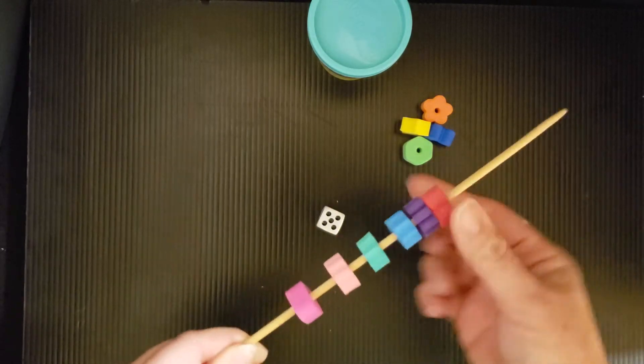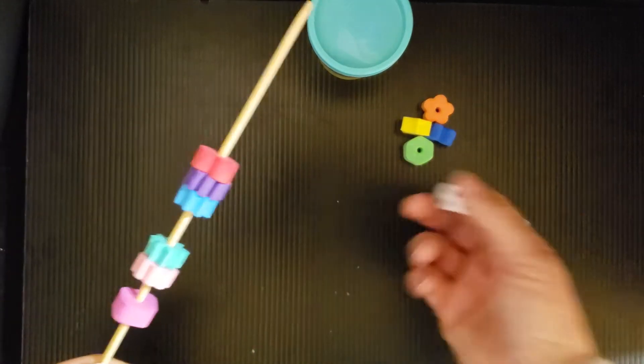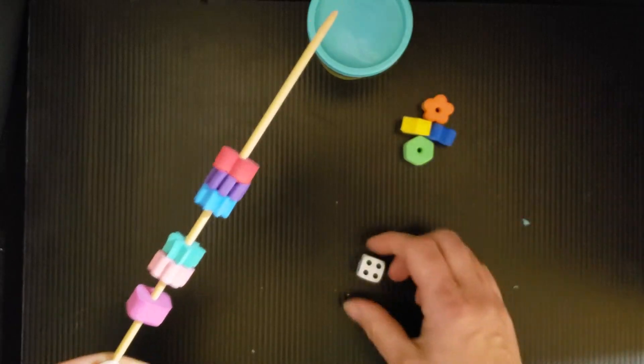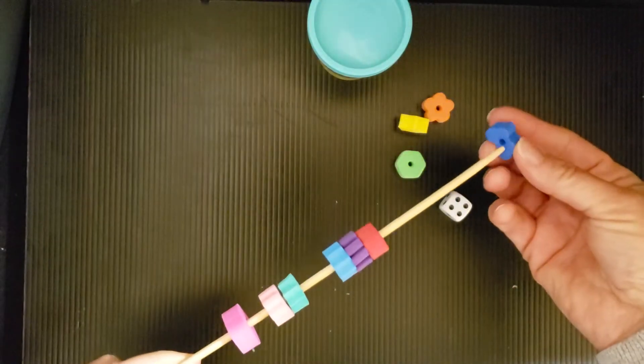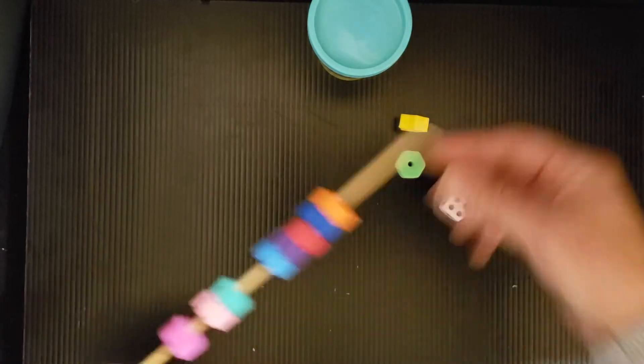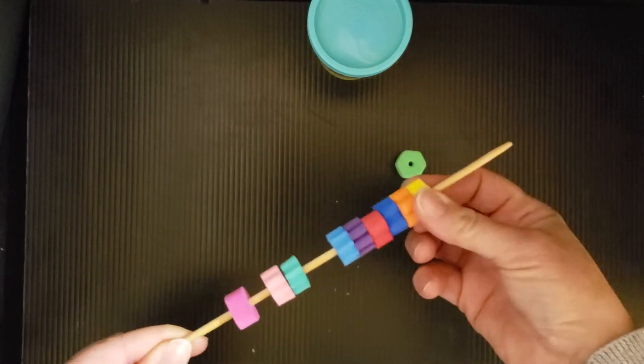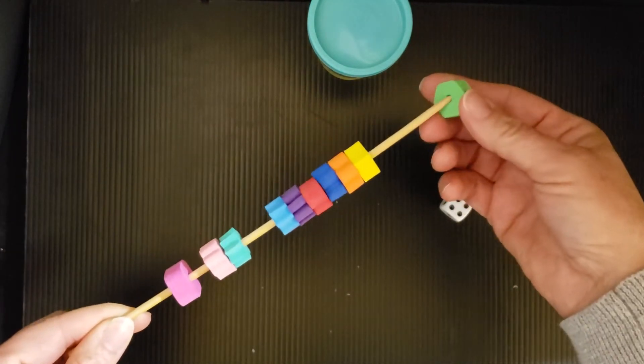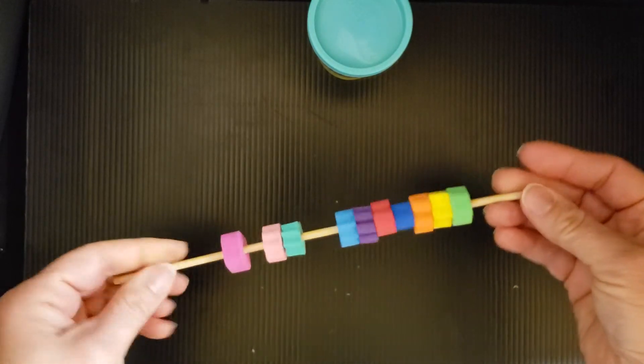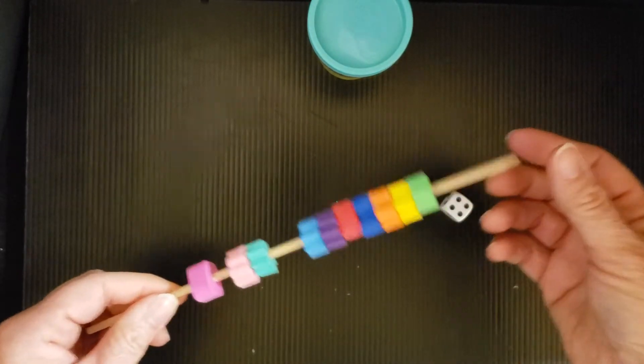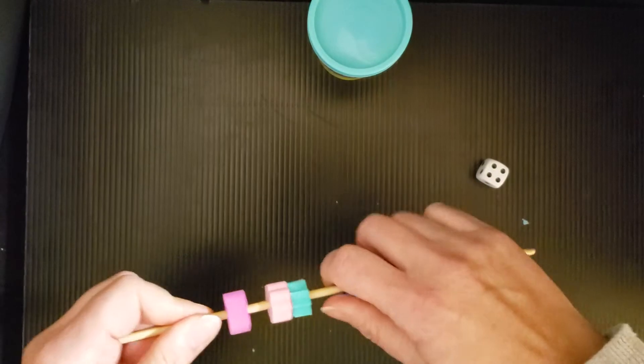Moving them down to make room for more. Roll again. Four. One, two, three, four. So that's one way to play with this. And you can take them off and keep playing, repeat again.